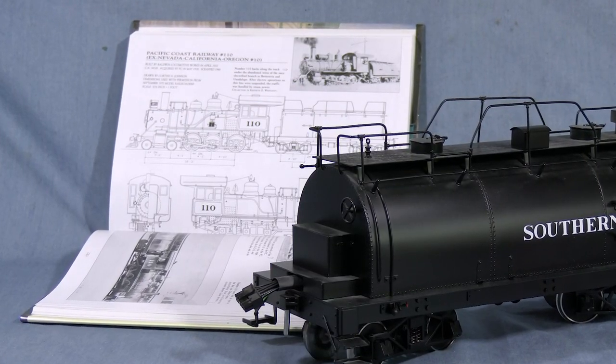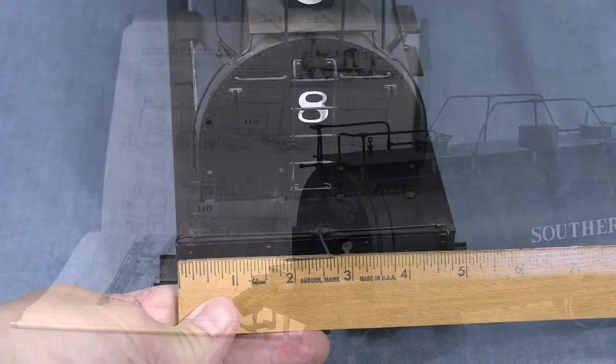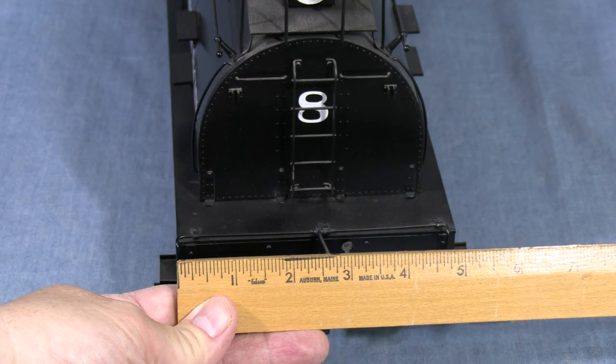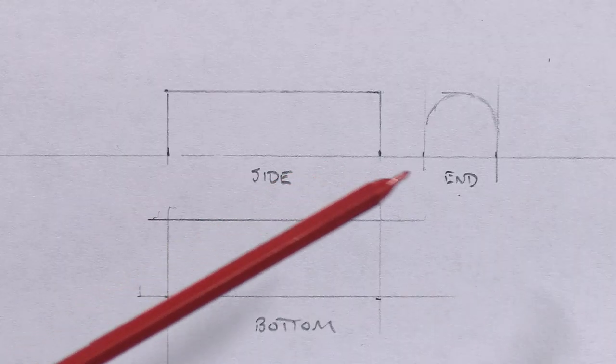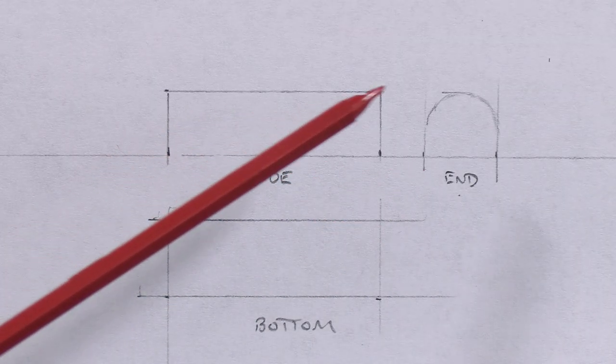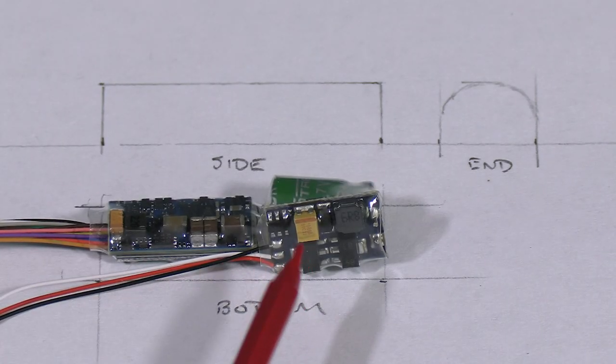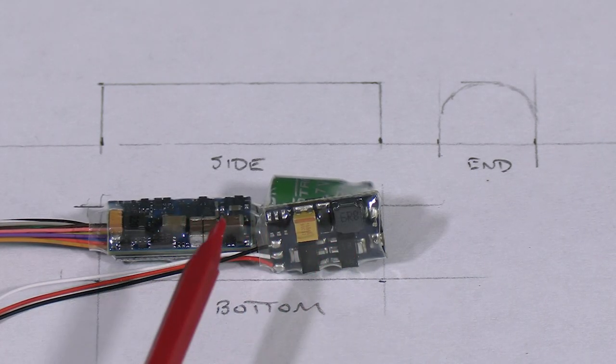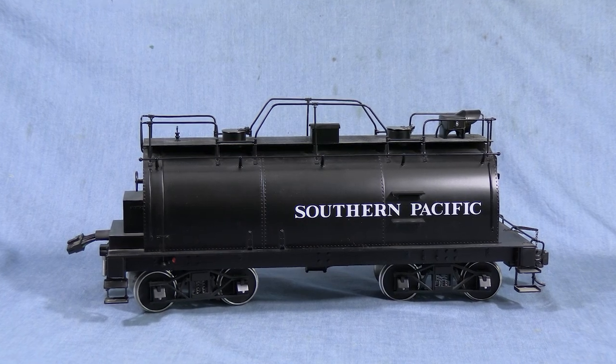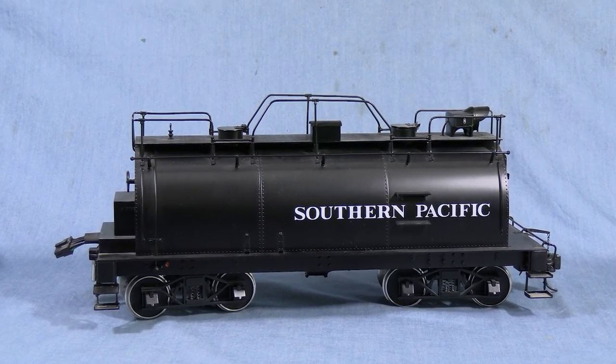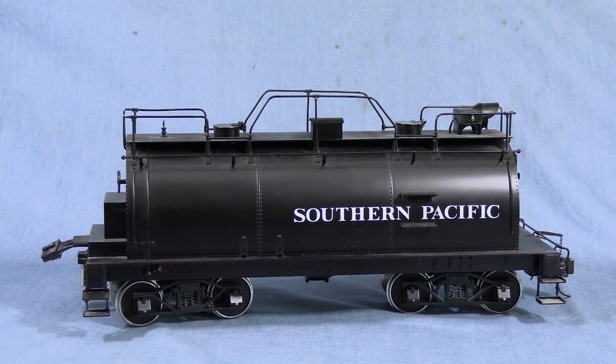Tenders of this style were used by the SP, Nevada, California, Oregon, and the Pacific Coast. My book on the Pacific Coast has plans for an engine with this type of tender. The tender body scales out to 20 feet long and 7 feet wide. Using my large-scale model and the plans in the book, I've drawn a rudimentary outline of the tender body in N-scale.